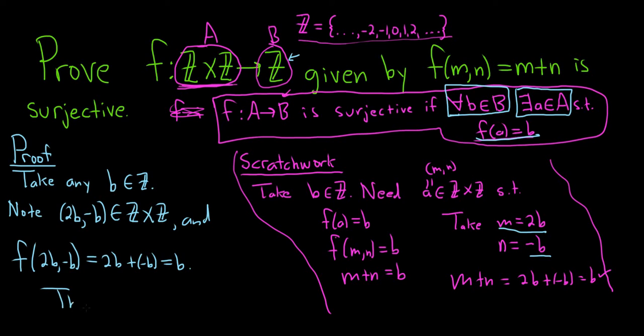So thus f is onto, or surjective, I'll say onto. Onto is the same thing as surjective. Typically when we finish our proofs, we use like a nice symbol, I'm going to use a box with an X, that's what I like to use.